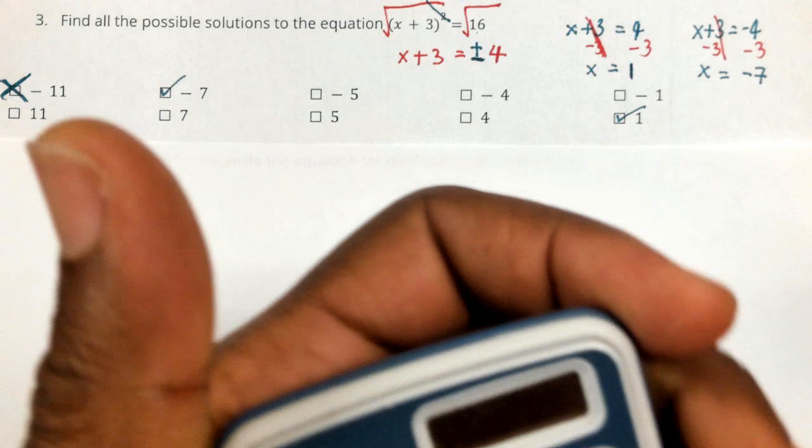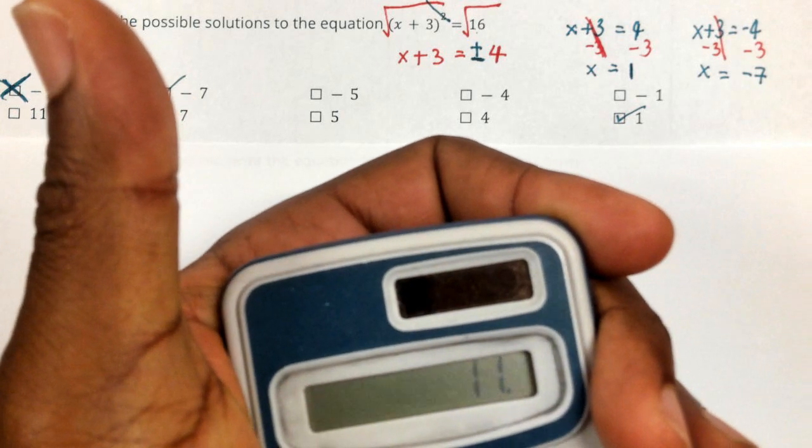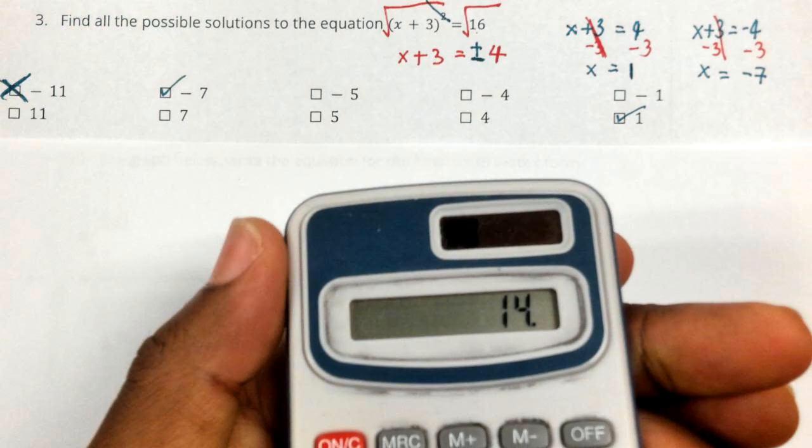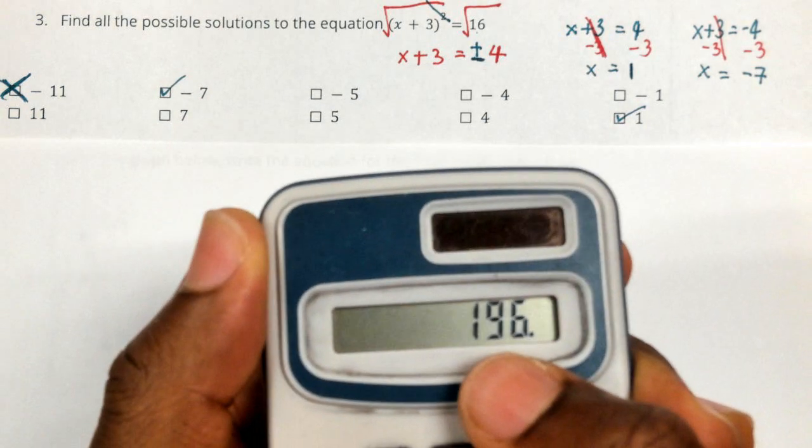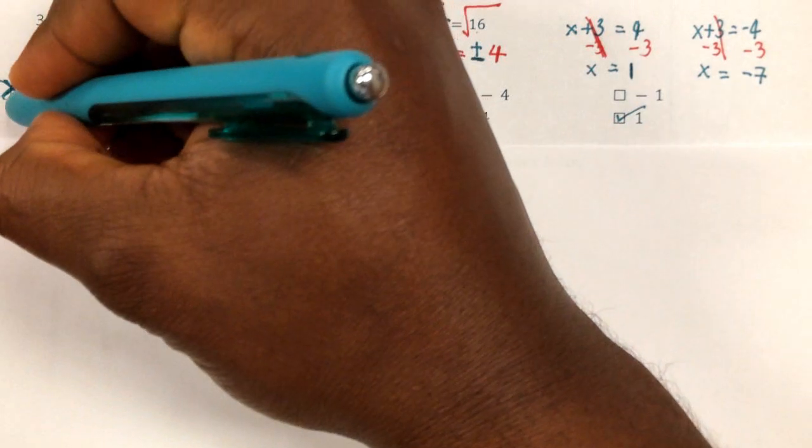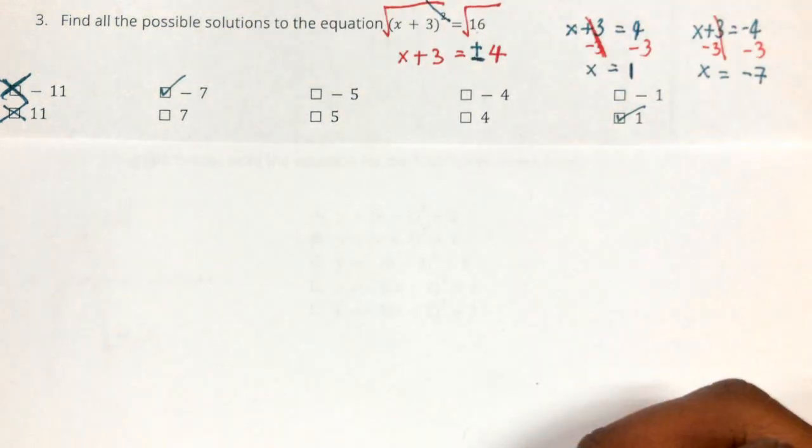If I did positive 11, 11 plus three is 14, then I would square that. So 14 times 14 is 196. So that would also not work.